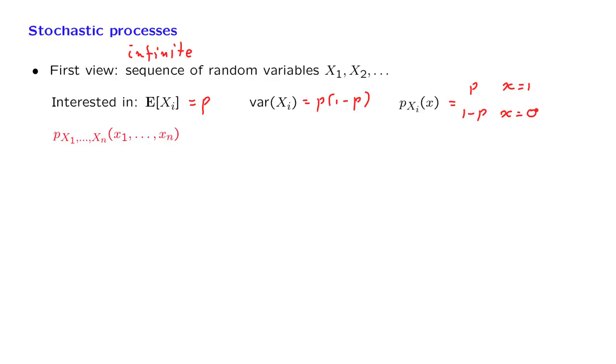And because we have an infinite number of random variables, it's not enough to do this for, let's say, the first 10 of them. We need to be able to specify this joint distribution, no matter what the number n is.